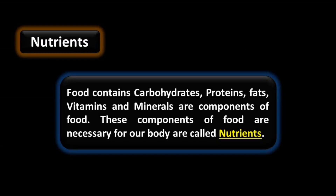Food contains carbohydrates, proteins, fats, vitamins and minerals — these are the components of food. These components of food that are necessary for our body are called nutrients. They help for the growth and regulation of our body, plant body as well as animal body.